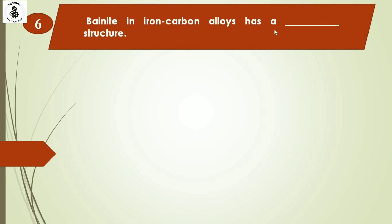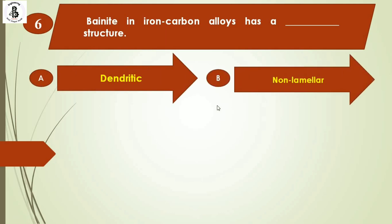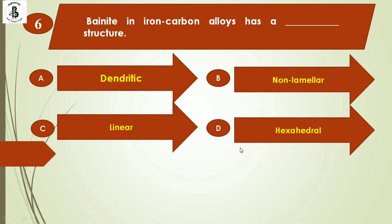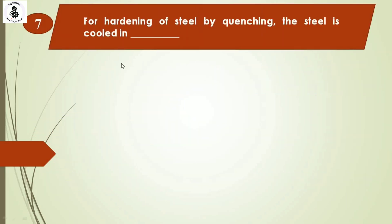Question 6: Bainite in iron-carbon alloys has which kind of structure? Option A: dendritic, Option B: non-lamellar, Option C: linear, Option D: hexahedral. Bainite in iron-carbon alloys is defined as an austenitic decomposition product with a non-lamellar eutectoid structure, containing ferrite and cementite (Fe₃C). The right answer is Option B, non-lamellar structure.